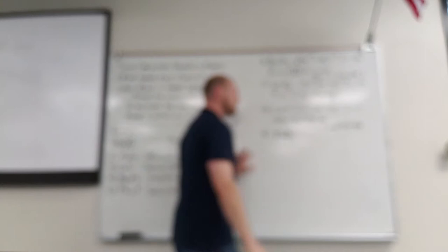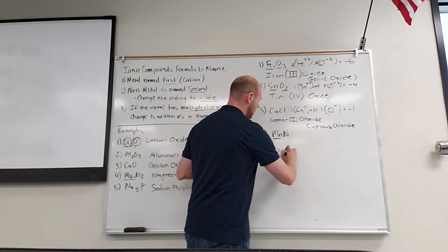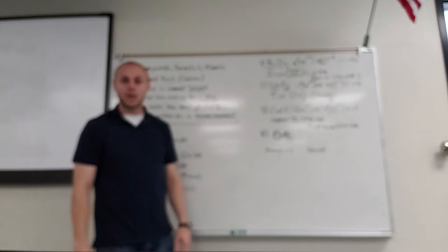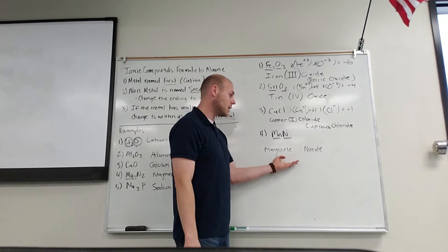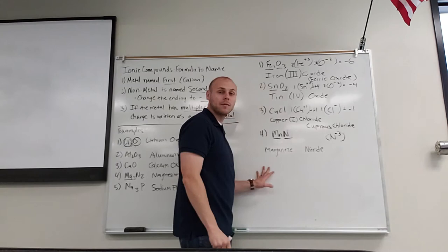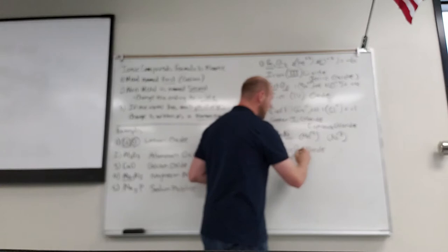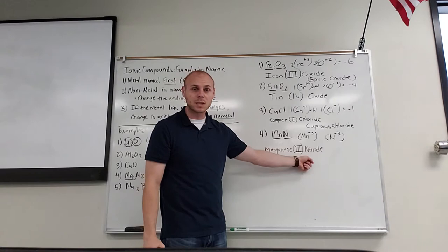Number four: MnN. We name the cation first — Mn is manganese. The anion is nitrogen; changing the ending to "-ide" gives nitride. This is a type two transition metal — it can be plus two or plus three. Nitrogen is in group five, so it has a charge of negative three. There is only one manganese, so it must have a charge of plus three to balance out the negative three. We write this as manganese(III) nitride, the III in Roman numeral representing the charge of the type two metal.